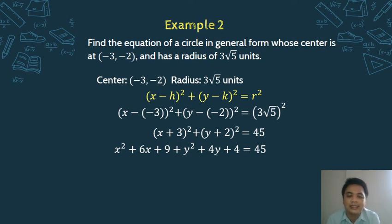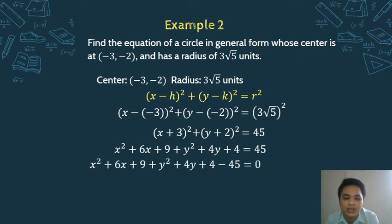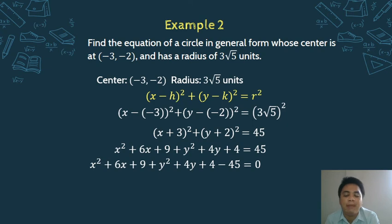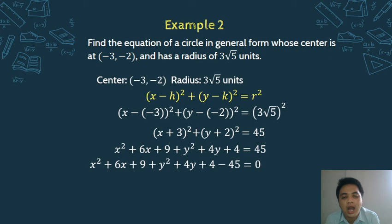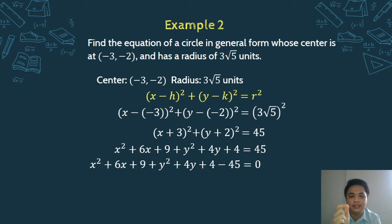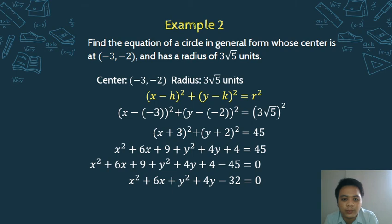Expanding: square the first term, multiply the first and second terms by 2, then square the last term. This gives: x² + 6x + 9 plus y² + 4y + 4 equals 45. Now isolate the constant — move 45 to the left side: x² + 6x + 9 + y² + 4y + 4 − 45 = 0. Combine like terms: 9 + 4 − 45 = −32. So: x² + 6x + y² + 4y − 32 = 0.